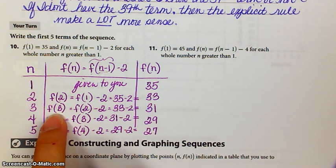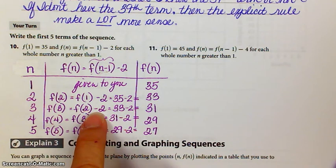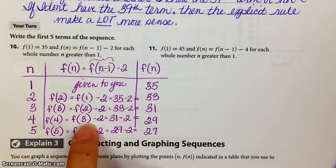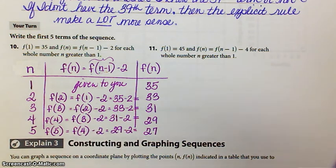Value of the third term is the value of the second term minus 2, so 31. Value of the fourth term is the third term value minus 2, which is 29, et cetera, et cetera.